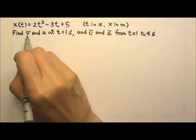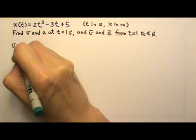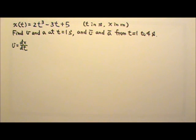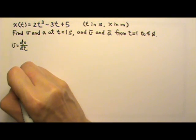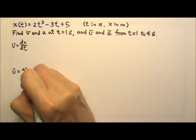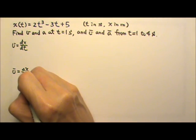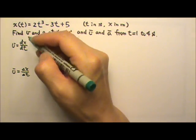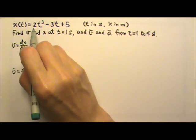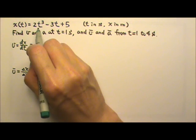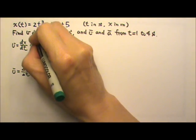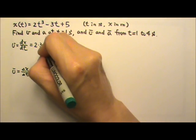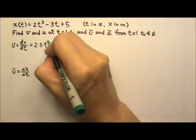The instantaneous velocity v as a function of time can be found by taking the derivative dx/dt, because the average velocity by definition is delta x over delta t, so the instantaneous value is dx/dt. To take the derivative of this polynomial, we look at one term at a time. The coefficient 2 stays, then we bring down the 3, and lose one degree of power, so it's t squared.